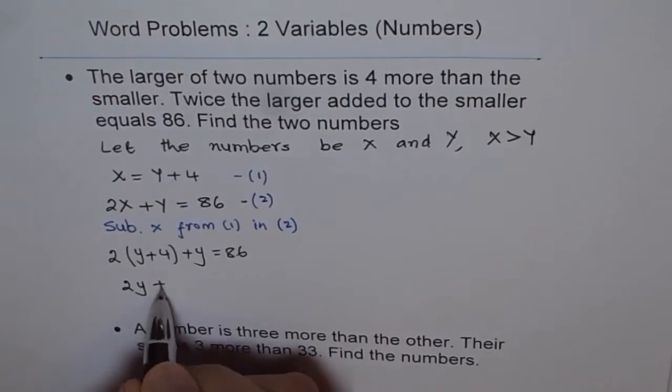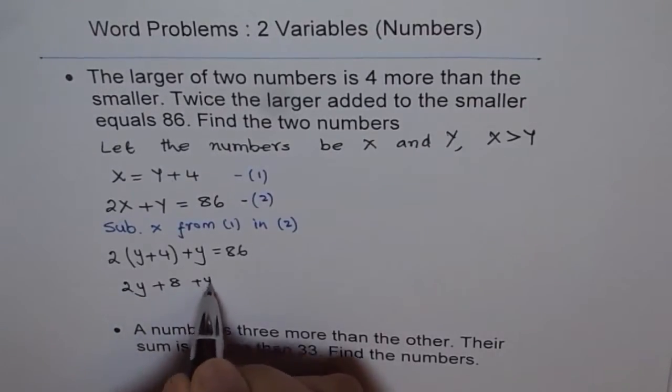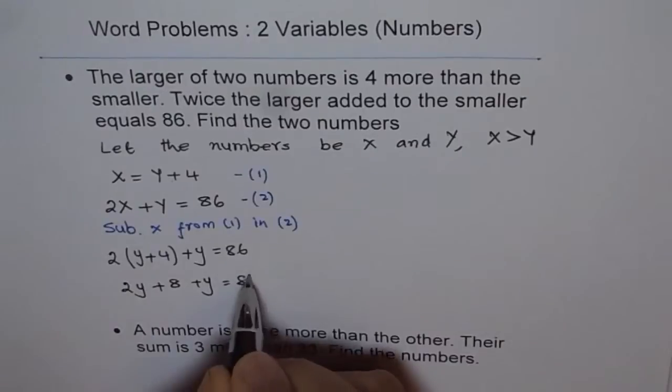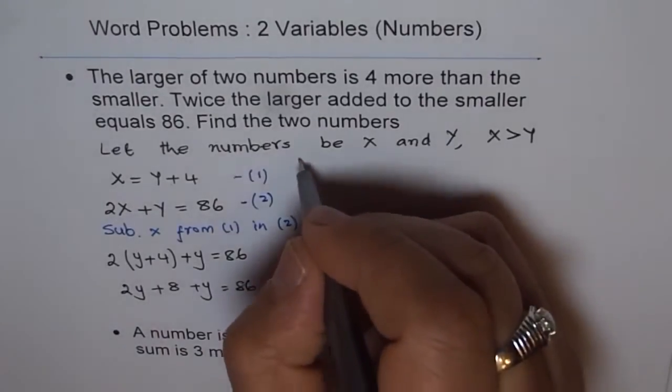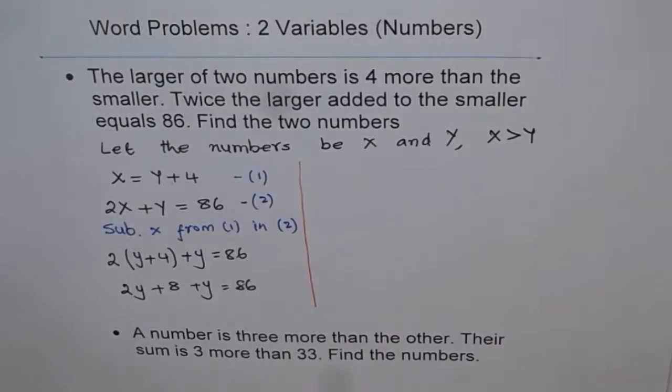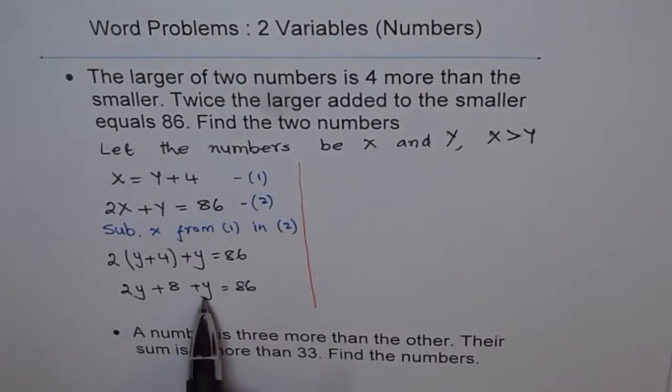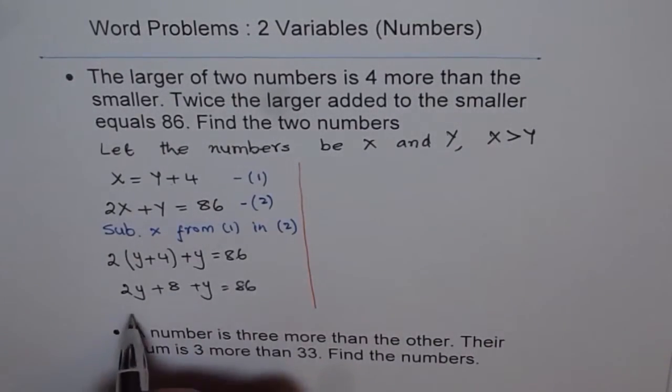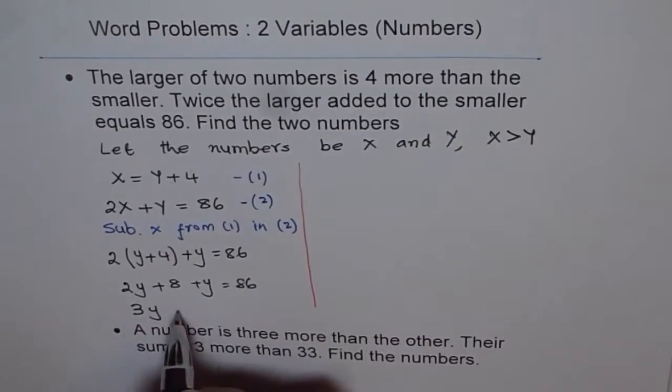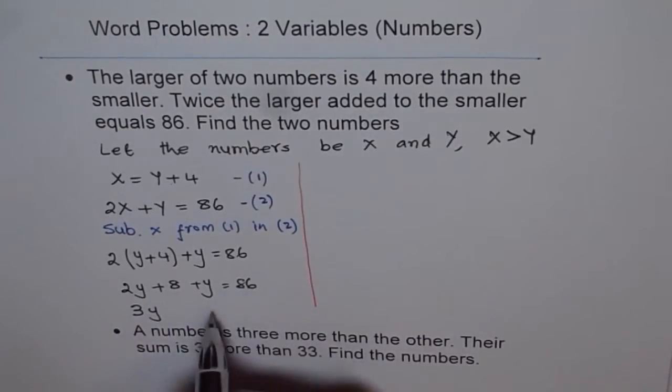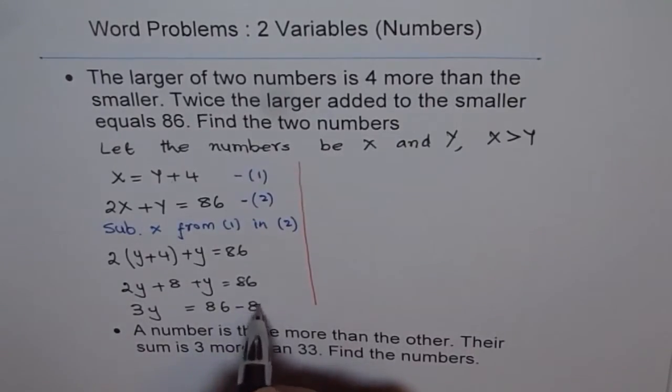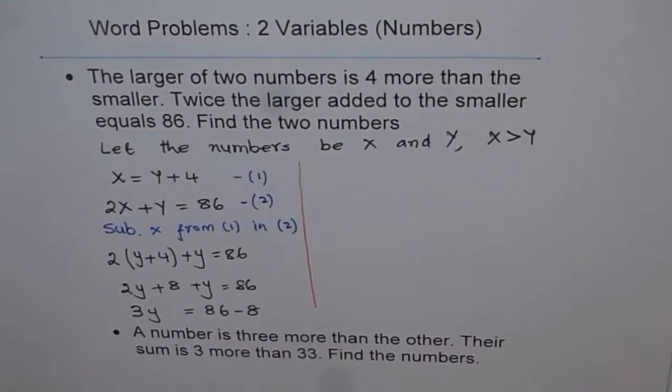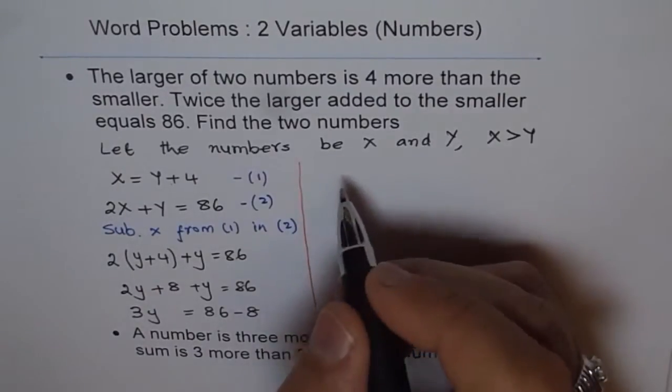So we get 2y plus 8 plus y equals to 86. To find the value of y, we need to rearrange and solve for y. So 2y plus y is 3y. And we will take 8 on the other side equals to 86 minus 8. So 3y is 86 minus 8.